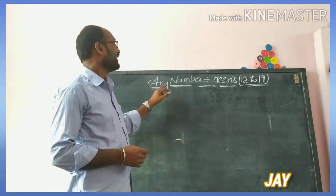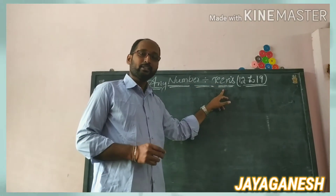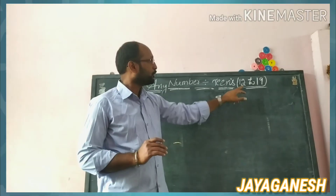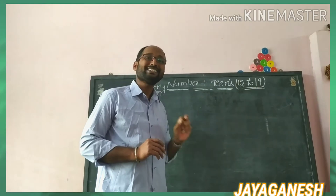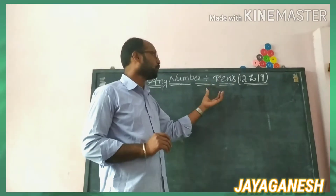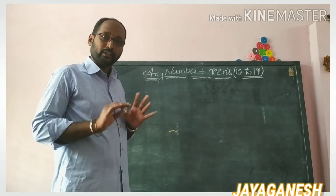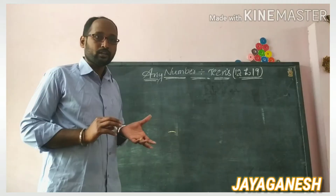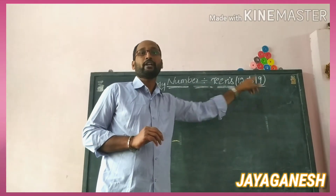Chapter number 5 is any number divided by teens. Teens means 13, 14, 15 — that is called a teen. But 12 is also included because from 12 to 19 the process is the same. Don't get confused — 12 is not technically a teen, but we include it here. We already learned 11; now I am going to teach you from 12 to 19.